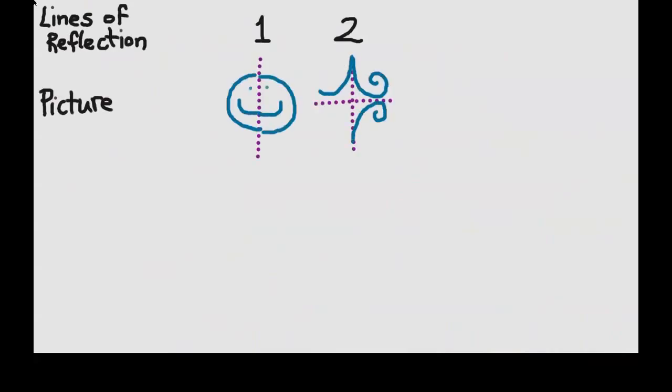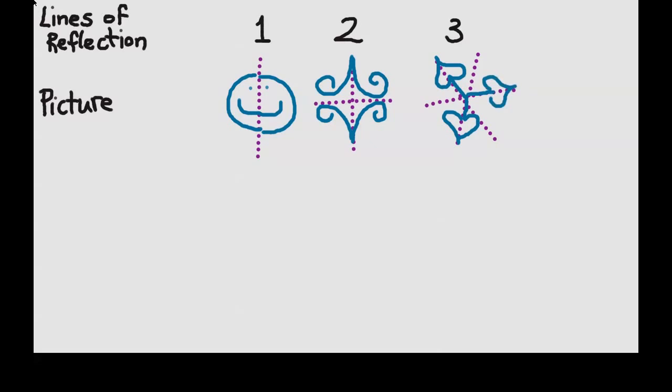Now, here I'm making a table. I have lines of reflection and then the picture that goes with it. With one line of reflection, I get something that looks like a happy face.